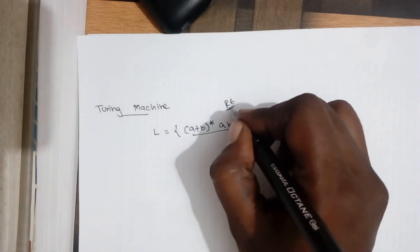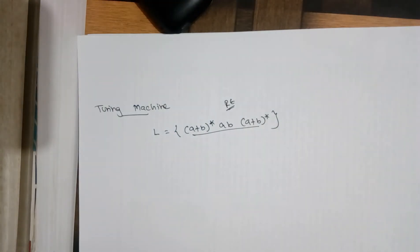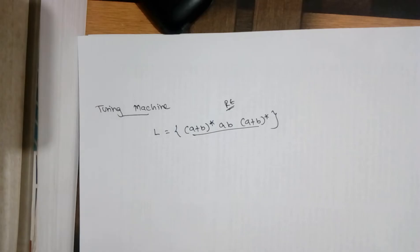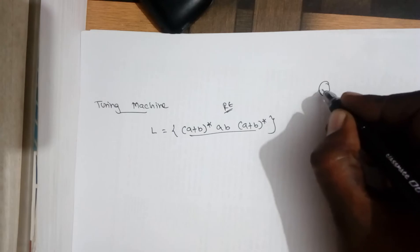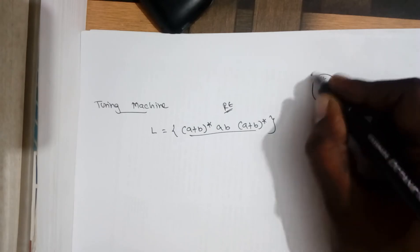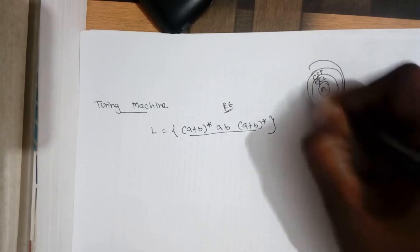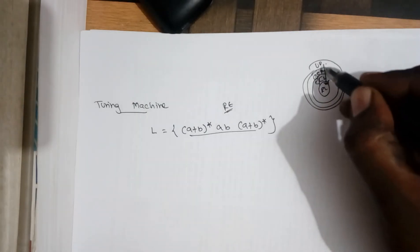Why we are using this regular language or regular expression for the construction of Turing machine is like Turing machine accepts unrestricted language. So it includes all context free grammar, all context free language, all context sensitive language, and all finite regular language can be again accepted by this Turing machine. So this unrestricted language includes all these things.